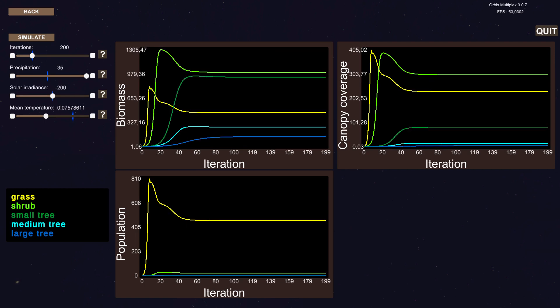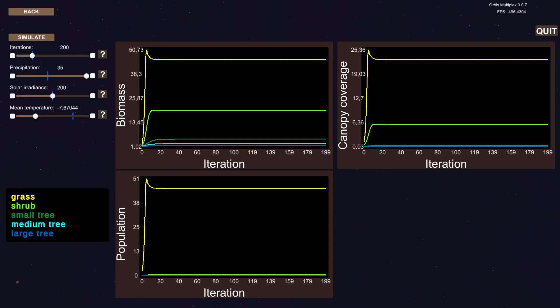When the temperature is lowered, the total biomass gets gradually lower, until barely nothing can grow anymore.